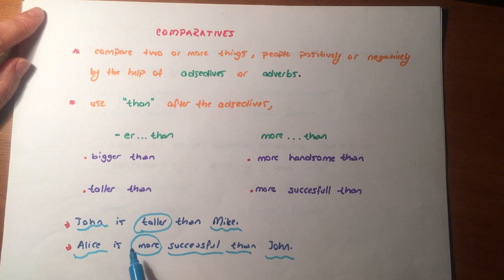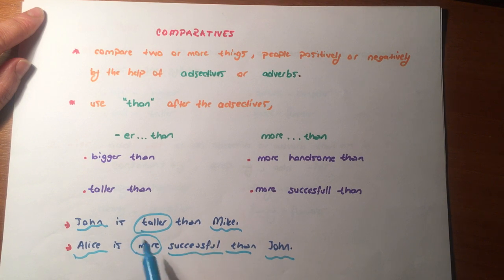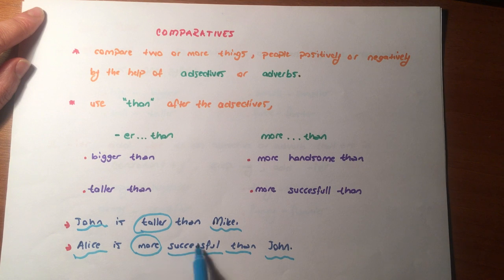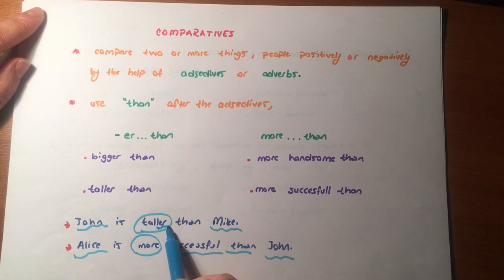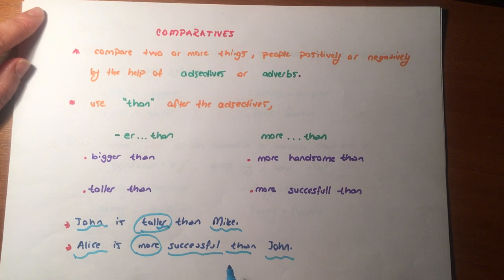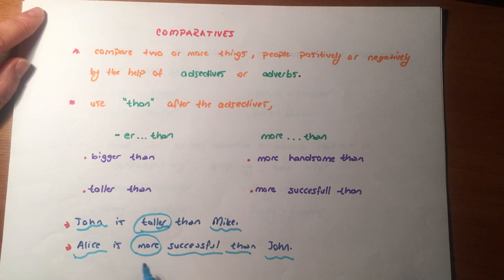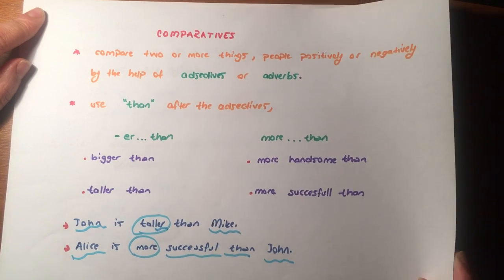Burada iki tane örneğimiz var. John is taller than Mike — John, Mike'dan daha uzun. Uzun olan kim? John. İlk sıraya yazıyoruz. Kimi karşılaştırdık? John ve Mike'ı, bir sıfat yardımıyla, ve '-er than' kullandık. Alice is more successful than John — Alice, John'dan daha başarılı. Daha başarılı olanı yine ilk sıraya yazdık. Burada 'more successful than' dedik. İkisinin arasındaki farktan şimdi bahsedeceğiz.